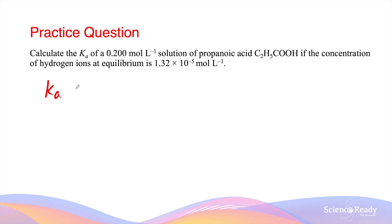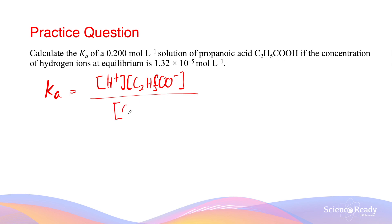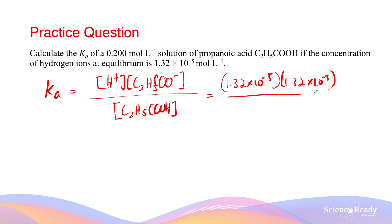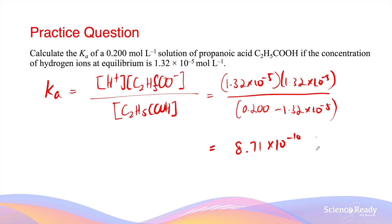Now the ICE table is complete. To calculate the equilibrium constant Ka, this is the concentration of H⁺ ion times the concentration of the conjugate base — when the acid loses a proton — divided by the concentration of propionic acid. Using our ICE table results, the concentrations of H⁺ and the conjugate base are both 1.32 times 10 to the minus 5, divided by the equilibrium concentration of the acid, which is 0.2 minus 1.32 times 10 to the minus 5. This gives 8.71 times 10 to the minus 10, reported to three significant figures.